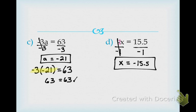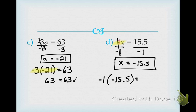Notice this: we had negative x, and all we ended up doing was bumping the negative over to the other side. Let's plug it back in: negative 1 times negative 15.5. If I have two negative numbers multiplied by each other, will my answer be positive or negative? Positive. The two negatives turn into a positive — so negative 1 times negative 15.5 equals positive 15.5. Does positive 15.5 equal positive 15.5? Yes, it does.